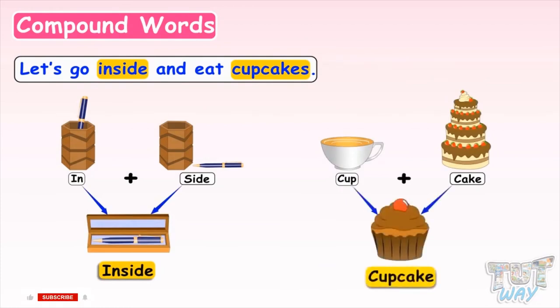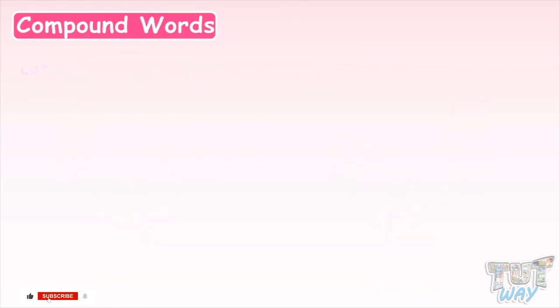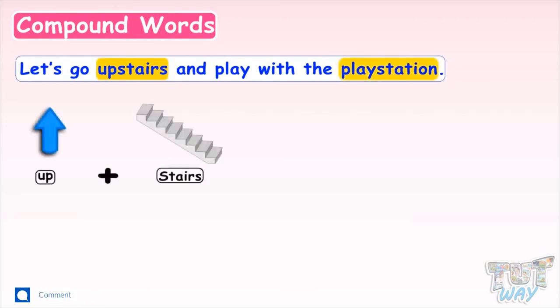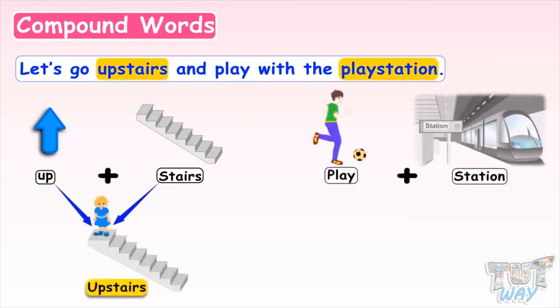Here is our next sentence. Let's go upstairs and play with the playstation. Here again we have two compound words. Upstairs and playstation. Up and stairs join together make upstairs. Play and station join together make playstation.